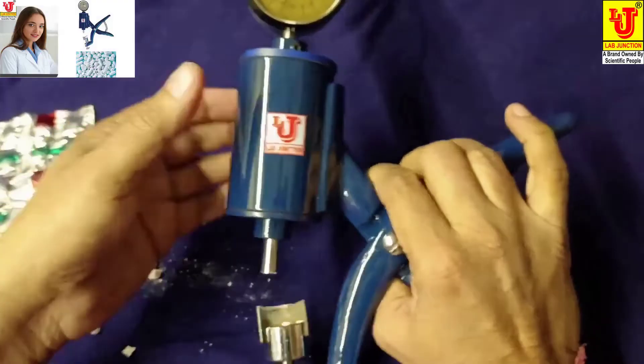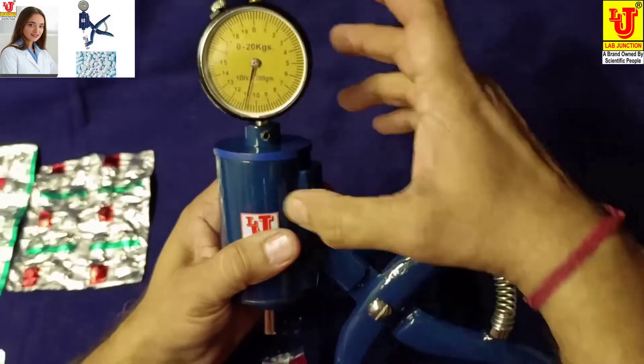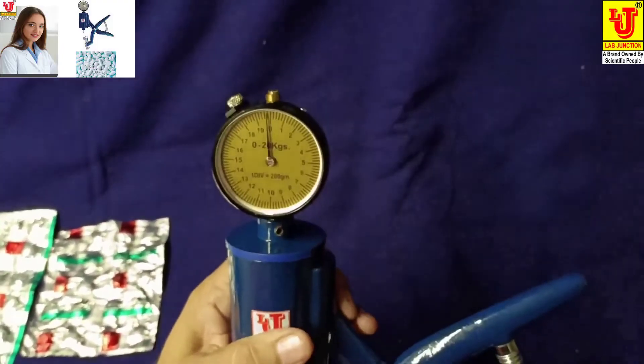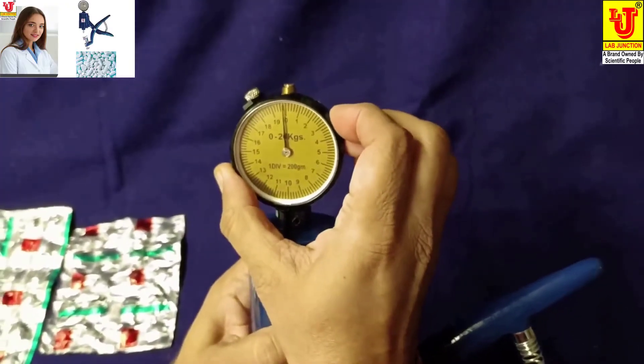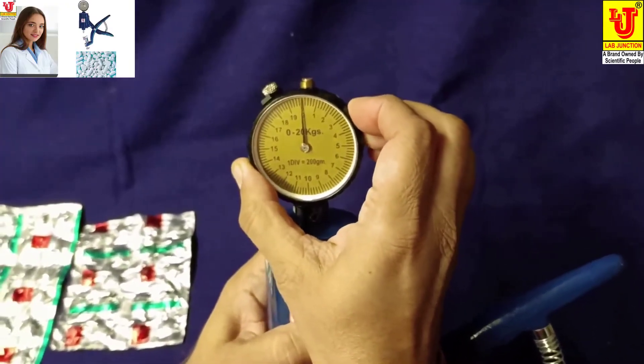When you take another sample, first you have to set zero like this. Adjust the mark to zero position.